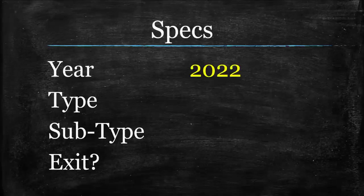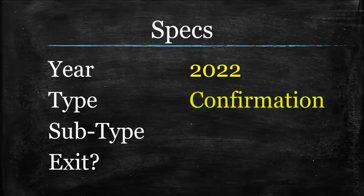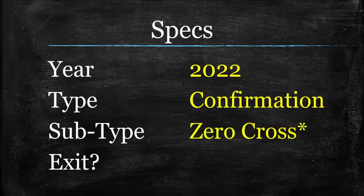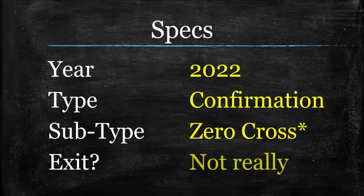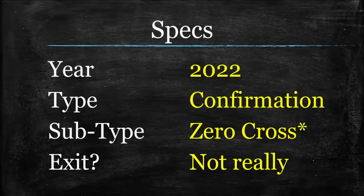The year here is 2022 — last year — certainly the most modern indicator we have had in this series to date. The type is a confirmation indicator. It is also a zero cross, but I put that asterisk there because I don't know if that was the initial intent — I'm actually pretty sure it wasn't — but we just kind of made it one. As far as being an exit indicator, I wouldn't personally. You certainly can, but I don't think this would be the best way to go. So without further ado, let's take a look at it.